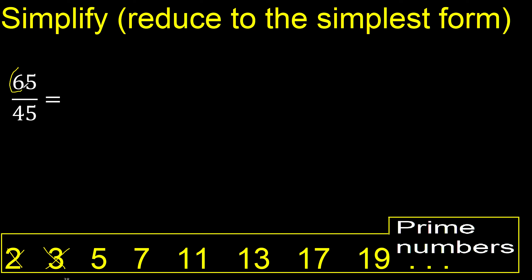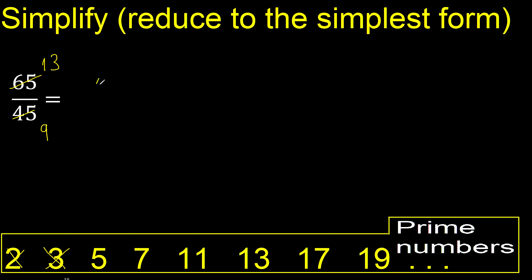6 plus 5 equals 11, which cannot be divided by 3. They can be divided by 5 because the last digit is 0 or 5 — here it is 5. Therefore, dividing by 5: 65 divided by 5 is 13, and 45 divided by 5 is 9. We stop here because we cannot divide by the same number again.